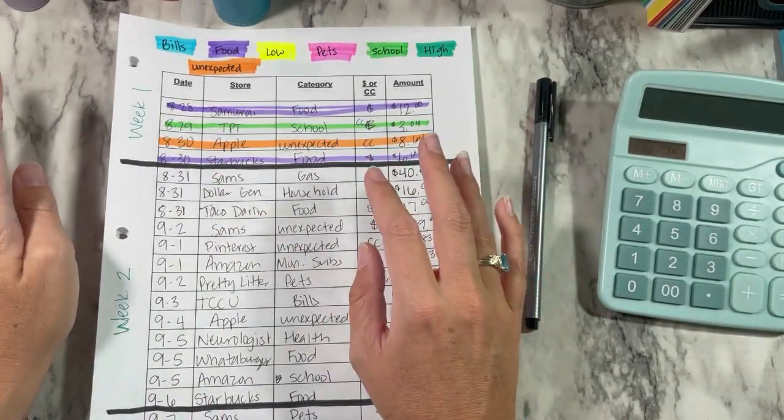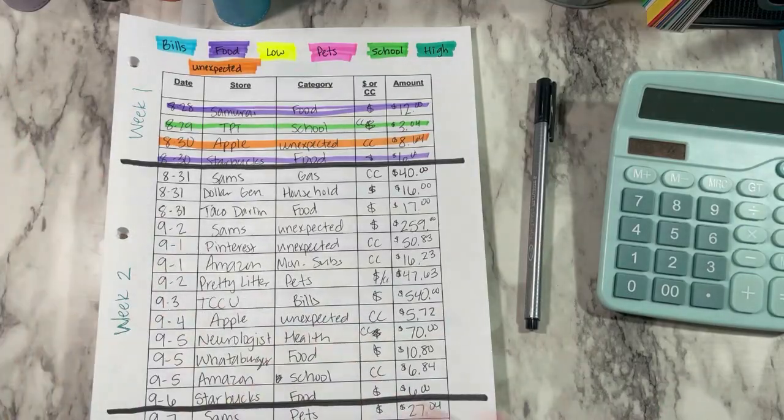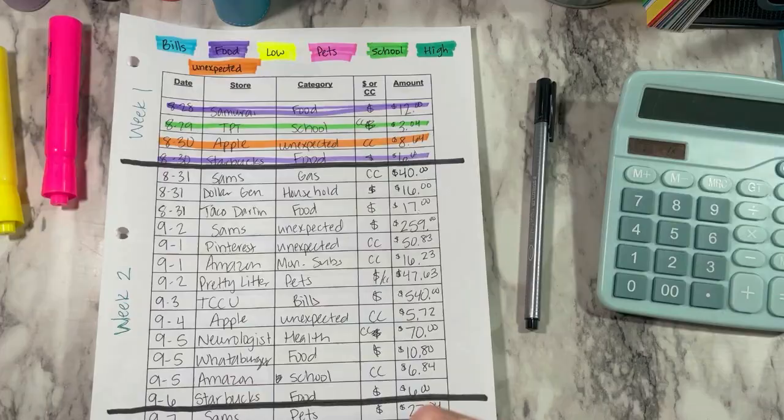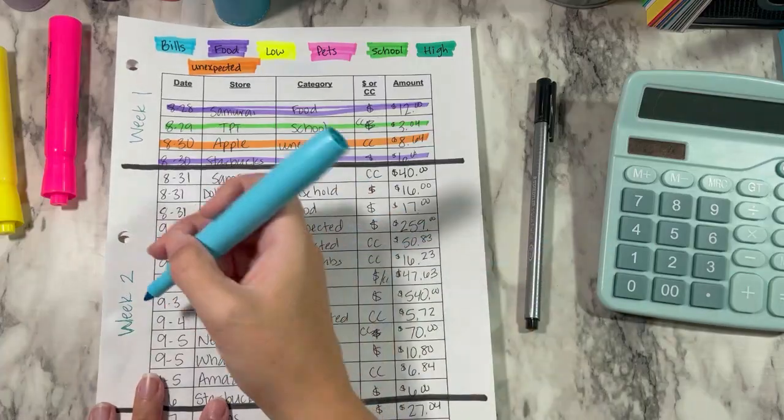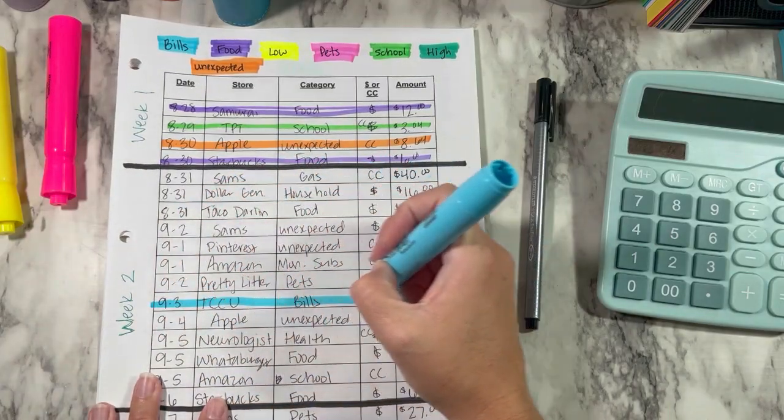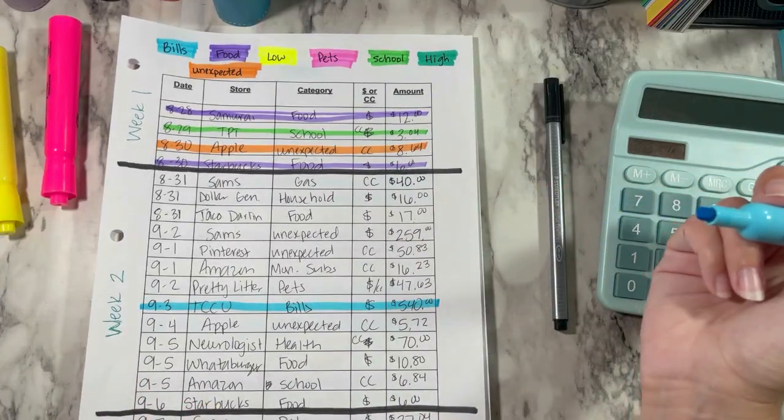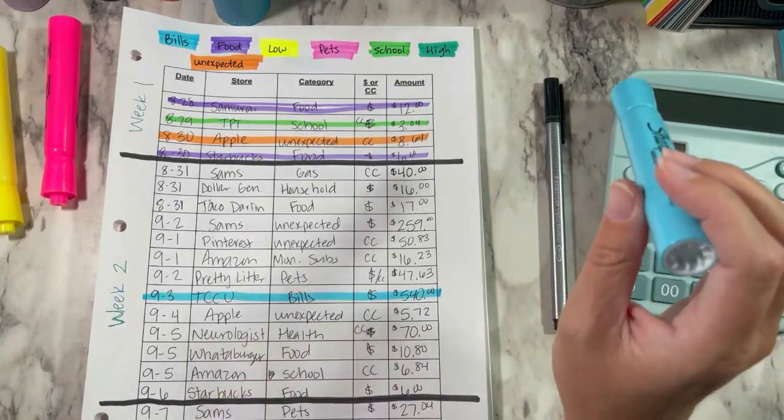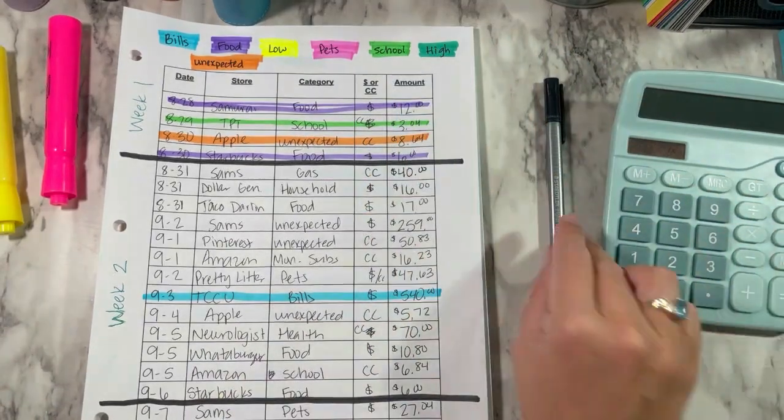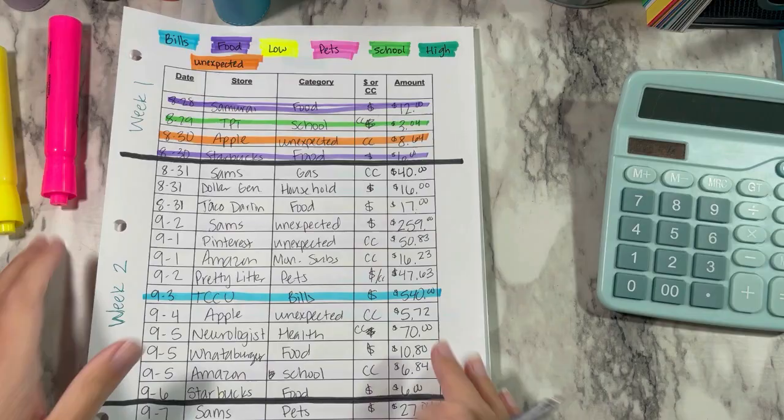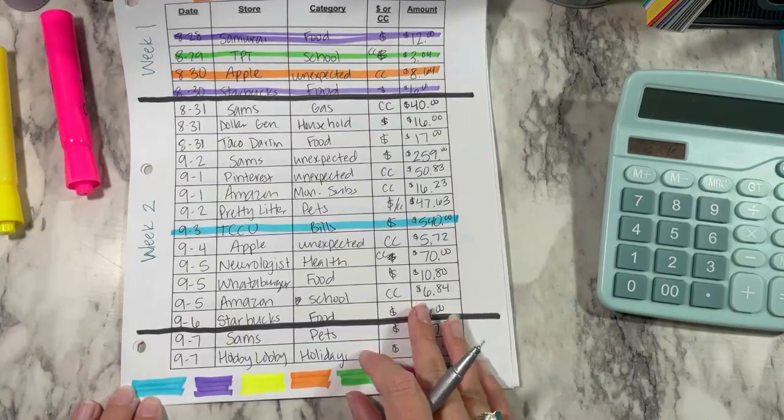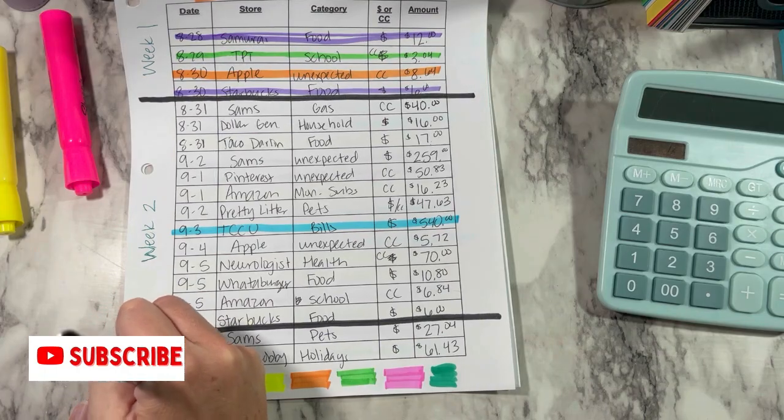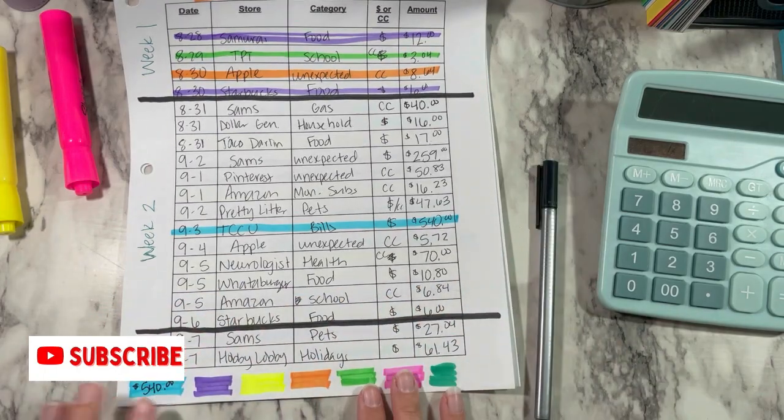So we'll start with bills. Let me get out my highlighters here, put them over here to the side. So bills, looks like the only one I had was my Jeep payment. And usually I pay that when I first get paid, but I had totally forgotten. So I paid it on this week. So for bills down here at the bottom, I write how much it was in all. So it was $540 for bills.